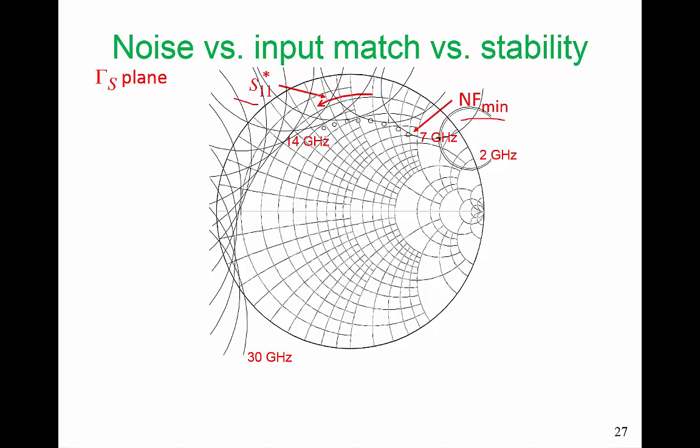So we would probably want to at least be in here. And if we have a locus for our input matching network reflection coefficient just inside, we're going to have a very small trade-off on NFmin, a little bit bigger trade-off on the optimum design for maximum power transfer or gain.